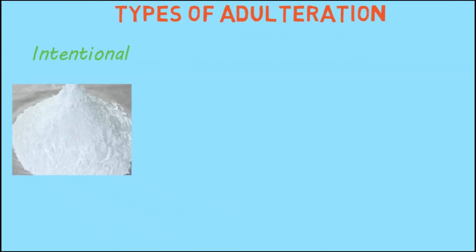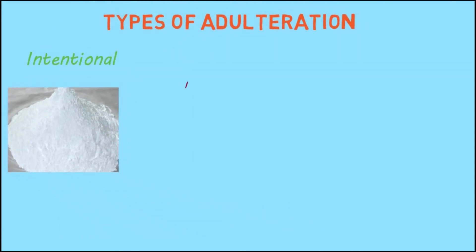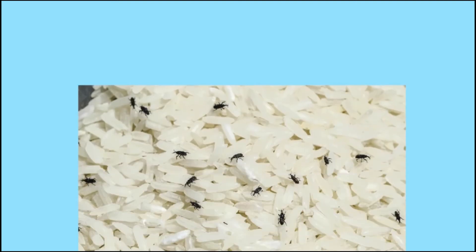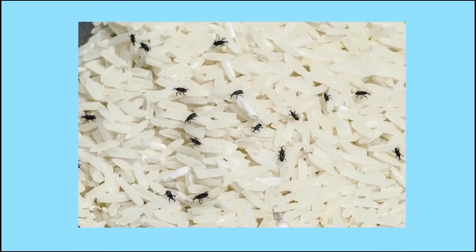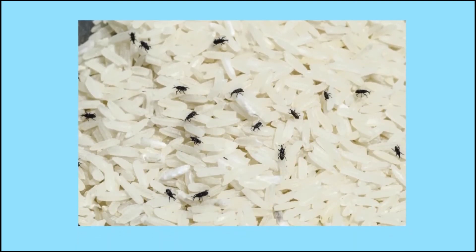Incidental adulteration: adulterants are found due to negligence and ignorance of food storage. For example, insects found in rice.